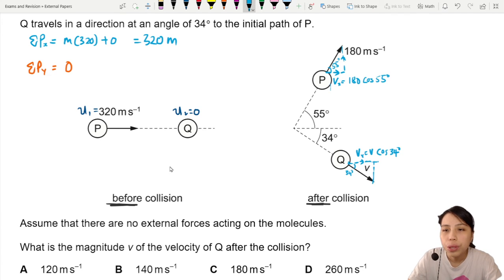Let's add up those horizontal components first. Now we know that whatever horizontal component you had must equal to what you have before the collision, 320. So your 320, which is your horizontal momentum, must equal to these two now. So we have 180 cos 55 plus V cos 34.